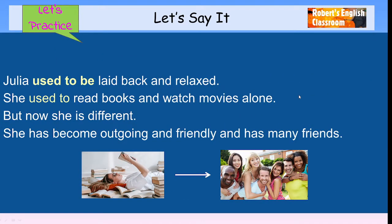Here are some examples. First one is the woman Julia. Julia used to be laid back and relaxed. She used to read books and watch movies alone. But now she is different. She's changed. She has become outgoing and friendly and has many friends. So, take a look at the picture. She used to read books, watch movies alone, laid back, relaxed. But she's different now. Now she's a social butterfly, outgoing and friendly.